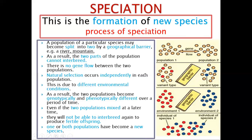When bringing an example in an exam, you must apply what you learned. If the example is about elephants, explain based on elephants; if it's bacteria or birds, explain based on those organisms. You must talk about the geographical barrier, that the two populations cannot interbreed, that there is no gene flow, that natural selection occurs independently due to environmental conditions, that the populations become genetically and then phenotypically different, and that when the barrier is removed they cannot interbreed to produce a fertile offspring — then state how many have become new species.